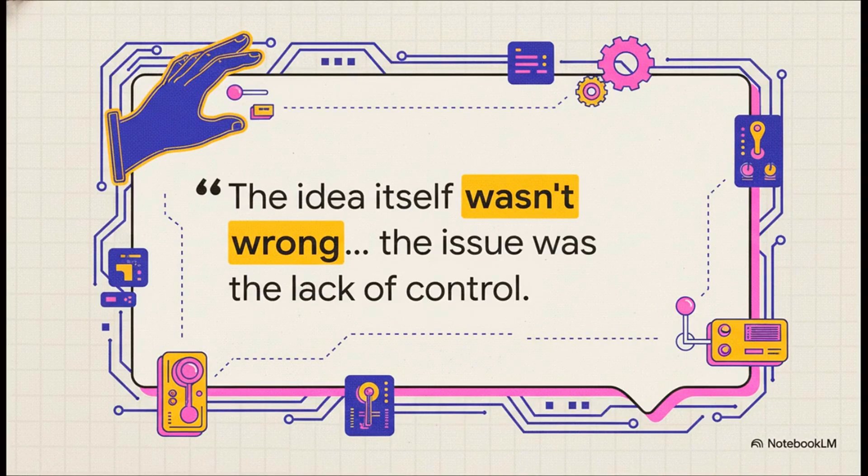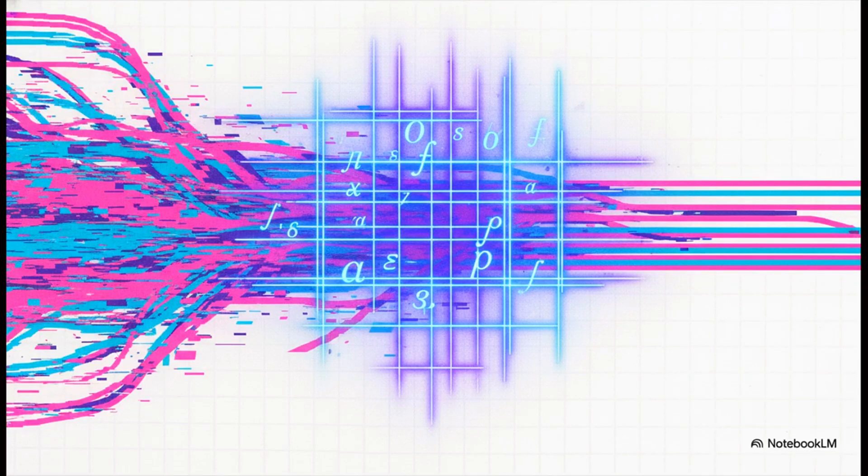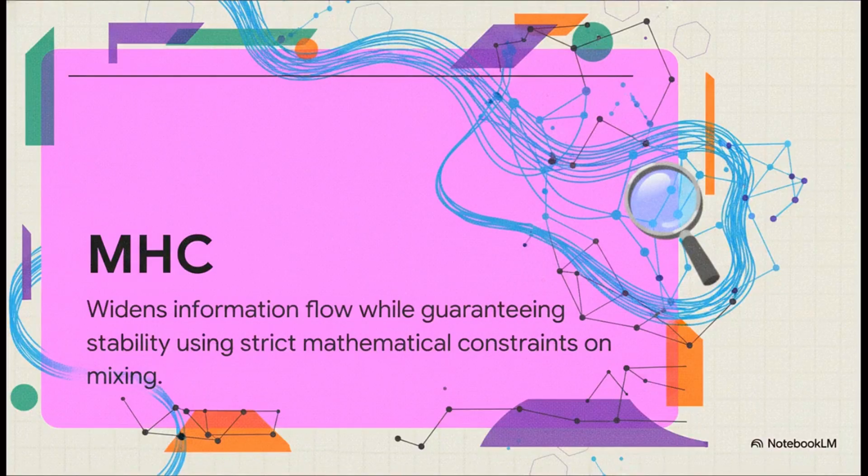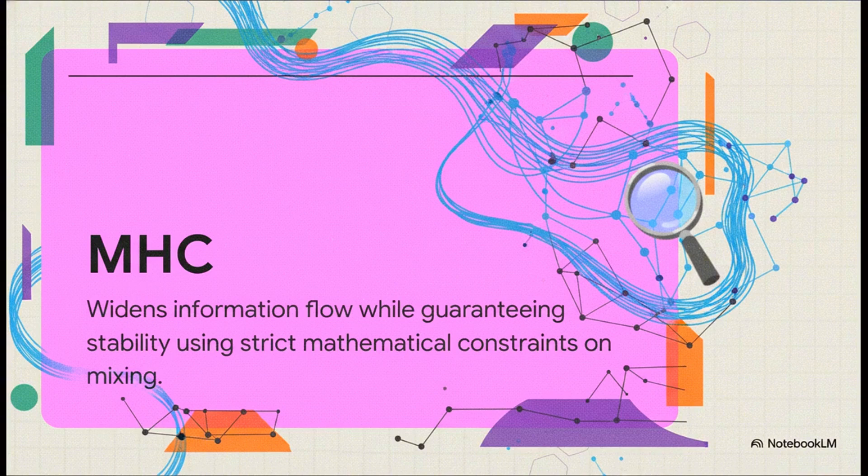So the idea itself wasn't bad. The problem was it was missing one crucial ingredient, control. And that control problem is exactly what DeepSeq decided to tackle head-on. Their fix is called Manifold Constrained Hyperconnections, or MHC.